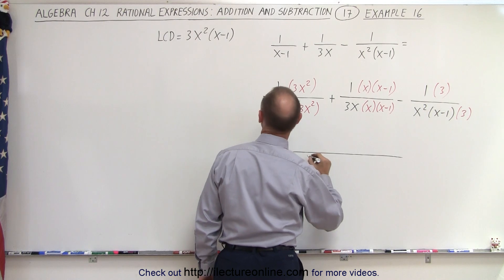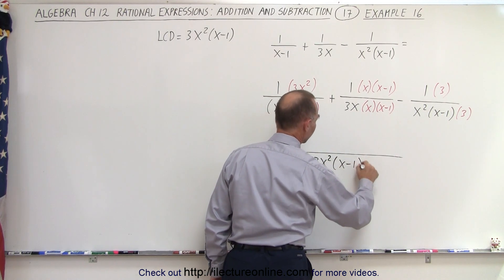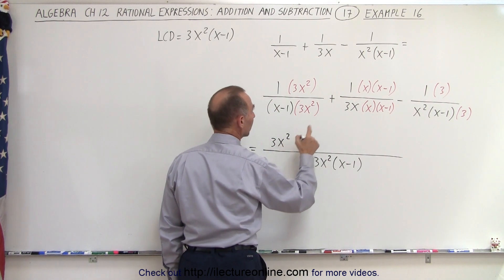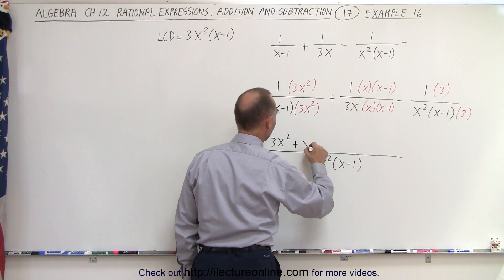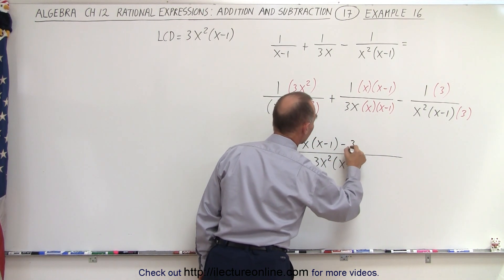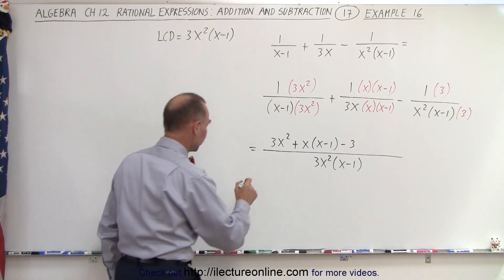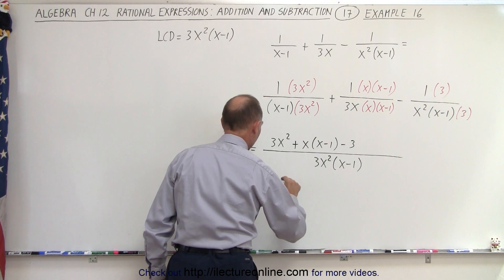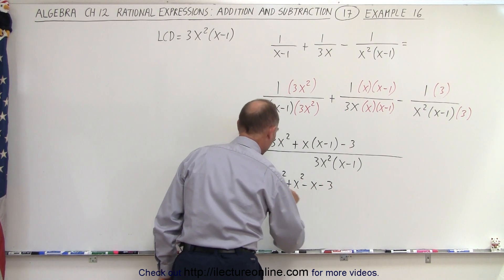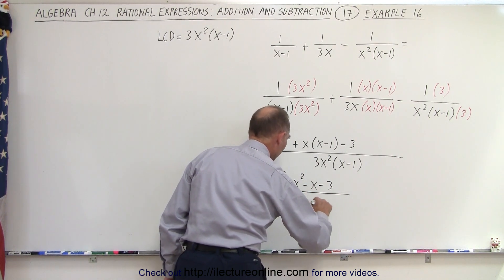Now we can write all these over the same common denominator of 3x squared times x minus 1. In the numerator, we have a 3x squared, we have an x, we have plus an x times an x minus 1, and we have a minus 3. So now multiplying out and collecting common terms, we get 3x squared plus x squared minus x minus 3, all divided by 3x squared times x minus 1.